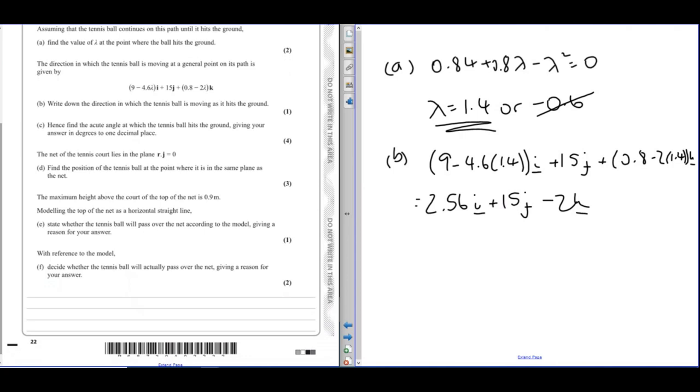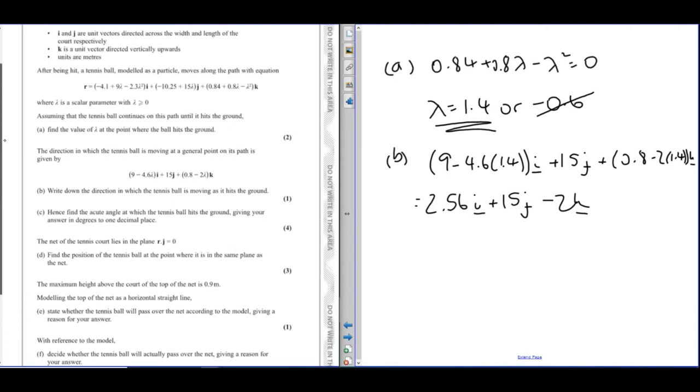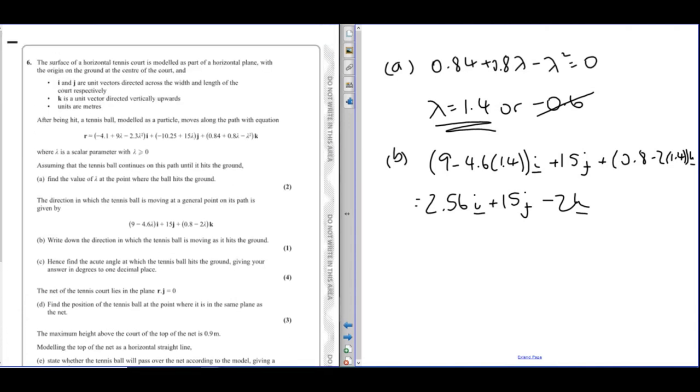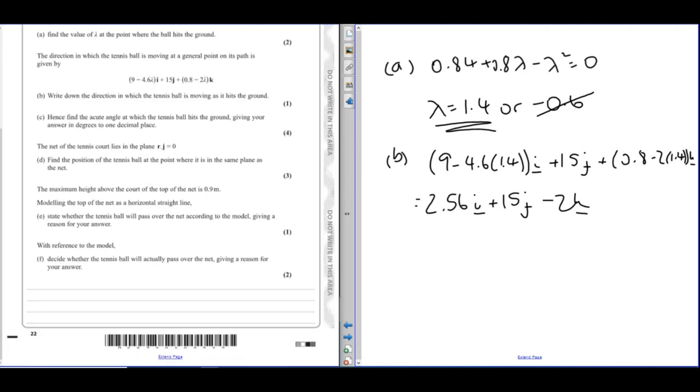It then wants us to find the acute angle at which the tennis ball hits the ground, giving your answer in degrees to one decimal place. So this is essentially an angle between a line and a plane question where the floor is modeled as the ij, so the xy axis. A vector that's perpendicular to that is basically just k, so 0, 0, 1.